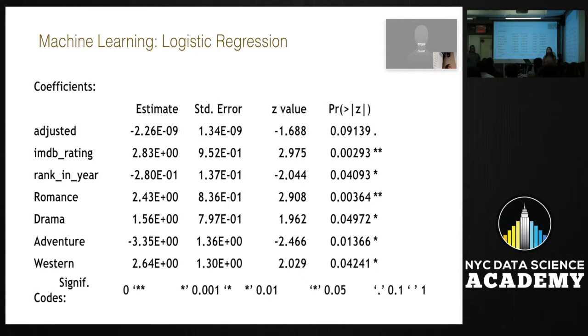So as my first model, I decided to fit a logistic regression. And the logistic regression, I used all the variables, but these are just the significant variables. So the adjusted is the box office sales adjusted for inflation. The IMDB rating was a significant variable as well as the rank in year, romance the genre, drama genre, and adventure and a Western also genre. But what's surprising or not surprising is that we already saw this in the exploratory data analysis. We saw that drama and romance were both very important in the decision of Oscar.